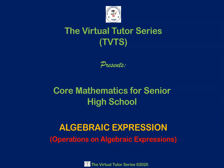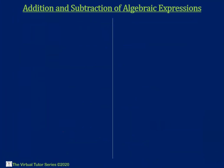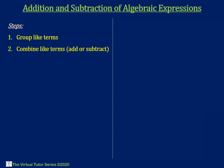Now back to today's lesson. We begin with addition and subtraction of algebraic expressions. Take your book and pen as you follow along. We can add or subtract the terms in a given algebraic expression by grouping the like terms and combining the like terms by way of adding or subtracting.